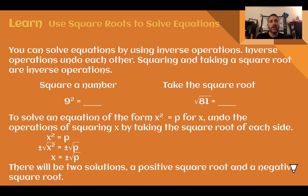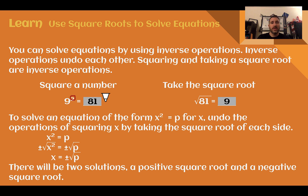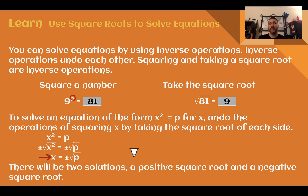Use square roots to solve equations. You can solve equations using inverse operations — they undo each other. Subtracting undoes addition; multiplication is the opposite of division. Squaring a number and taking the square root are inverse operations: 9 squared is 81, and if we take the square root, we get back to 9. If we want to solve for x when we see x squared, we take the square root of both sides. Because we don't know if the answer is positive or negative, we use the plus or minus symbol to show there could be two answers.